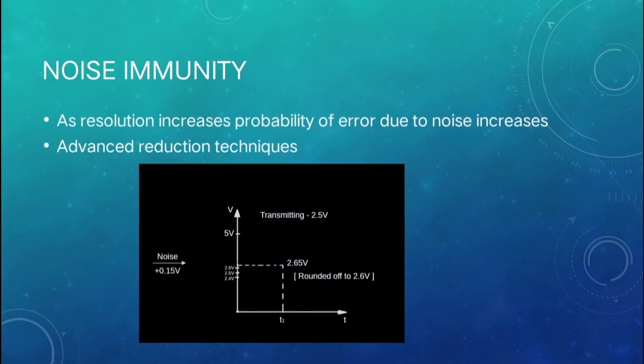Let us consider high resolutions. So there are more levels in the system and we are transmitting 2.5 volts and 0.15 volts of noise is added. Then the received voltage would be 2.65 volts and it is rounded off to 2.6 volts which is not equal to the transmitted voltage that is 2.5 volts. This means 0.1 volts of noise is received.